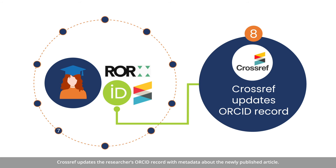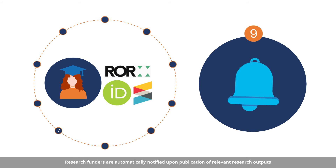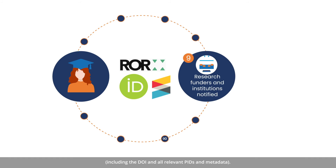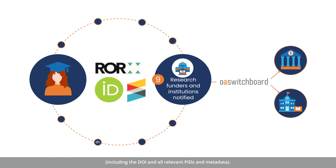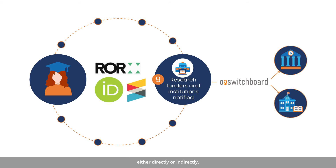Crossref updates the researcher's ORCID record with metadata about the newly published article. Research funders are automatically notified upon publication of relevant research outputs, including the DOI and all relevant persistent identifiers and metadata. Institutions too, regardless of whether they have covered the publication charges, either directly or indirectly.